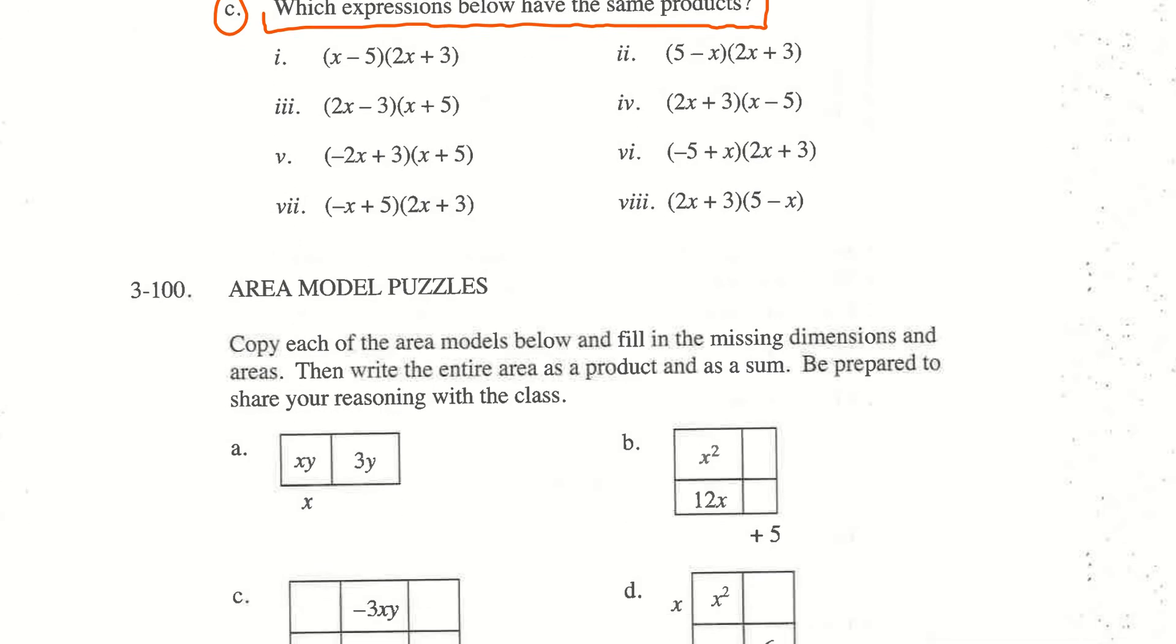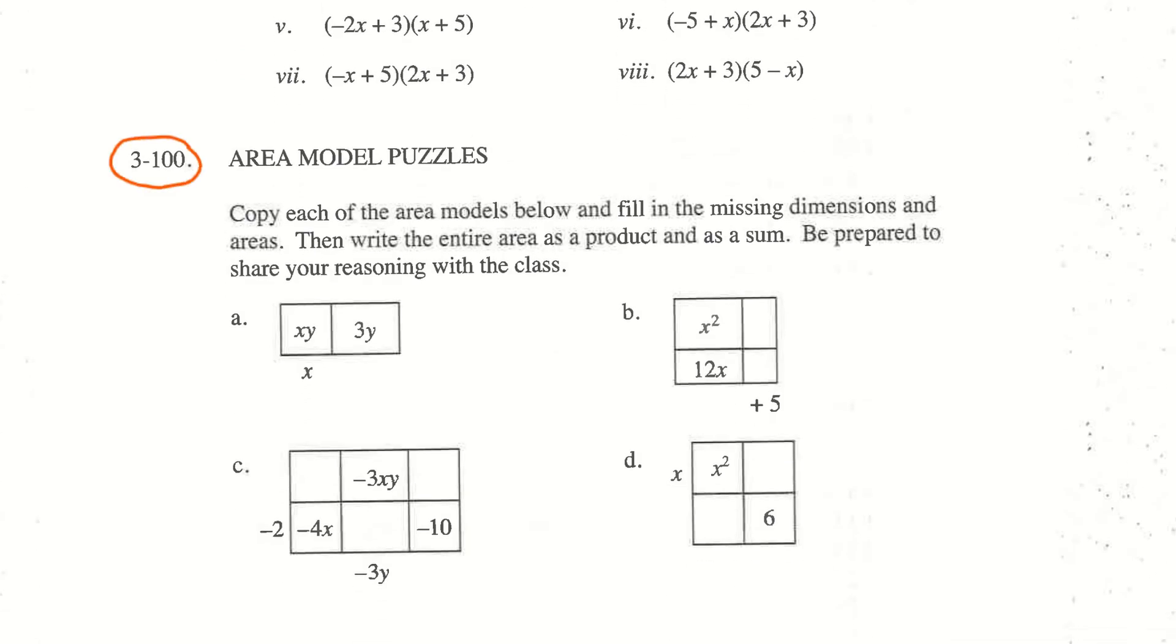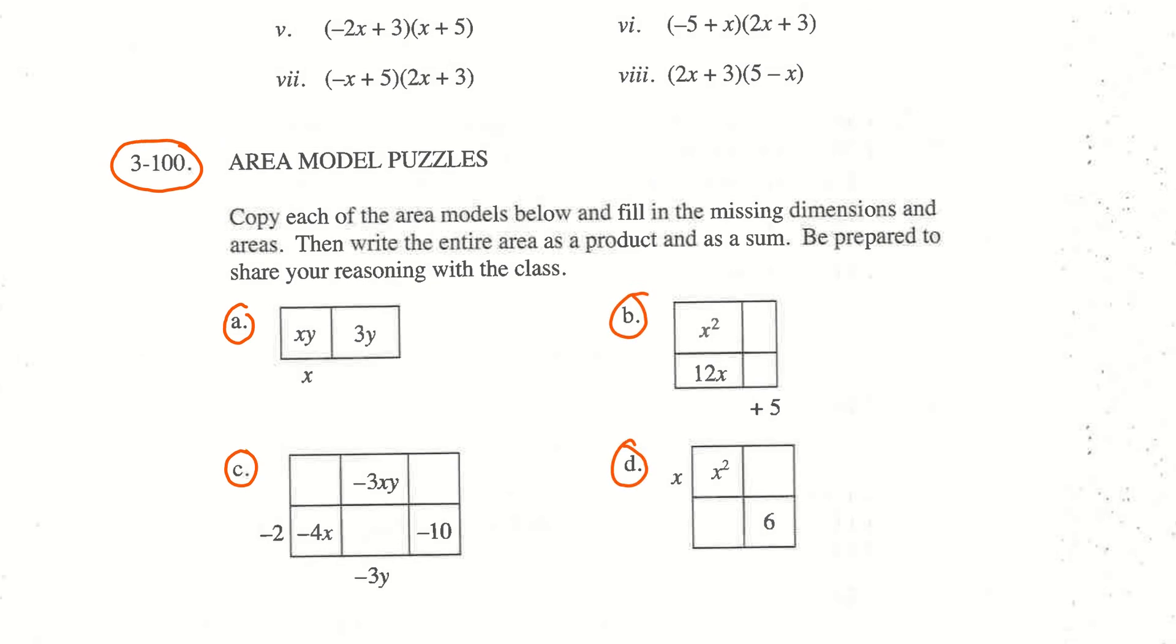The last thing we're going to do is question 100. You will need to copy these into your notes. It says copy each of the area models and fill in the missing dimensions and areas, then write the entire product as a sum. Be prepared to share your reasoning with the class. So these are kind of puzzles. It may take a little while to get them.